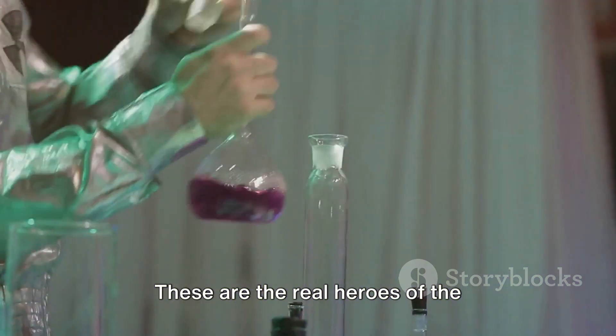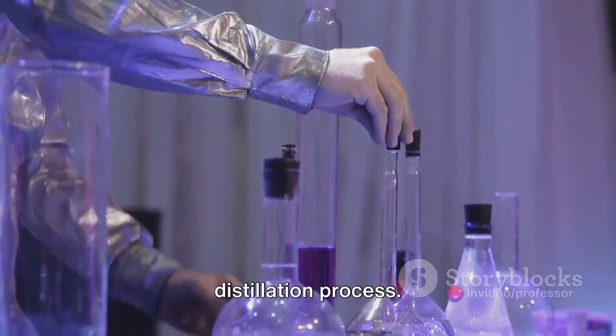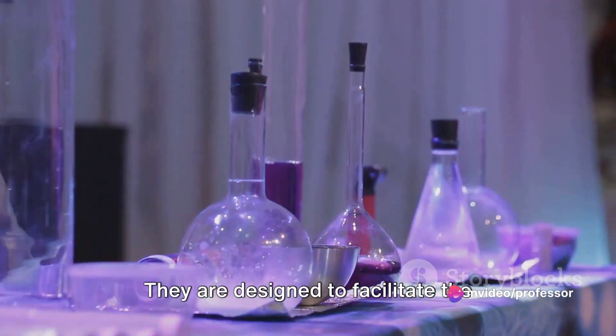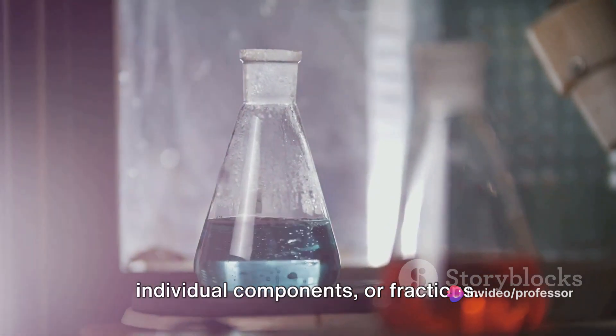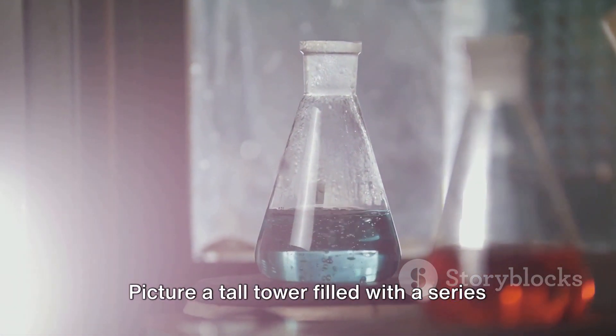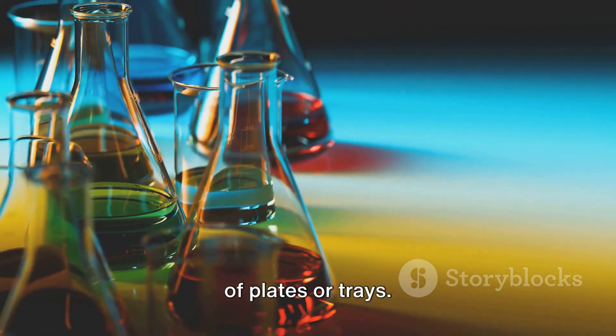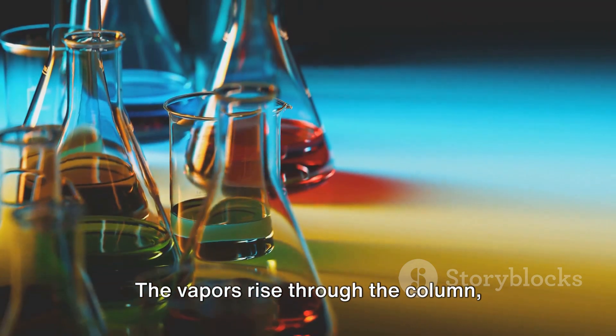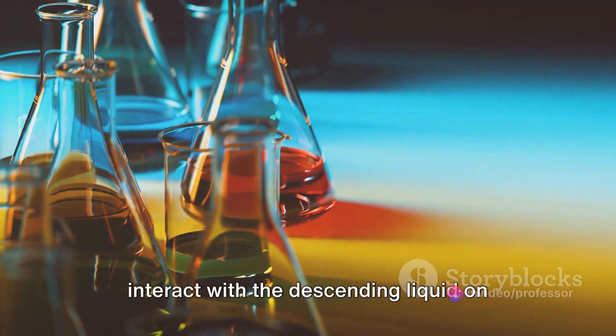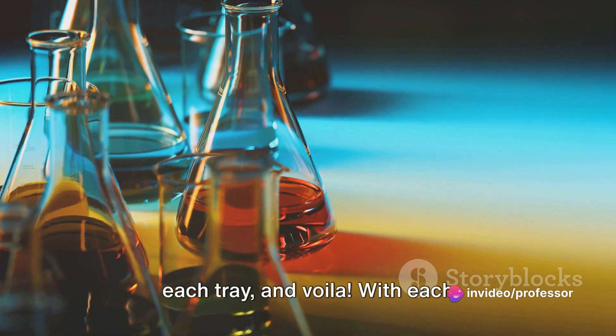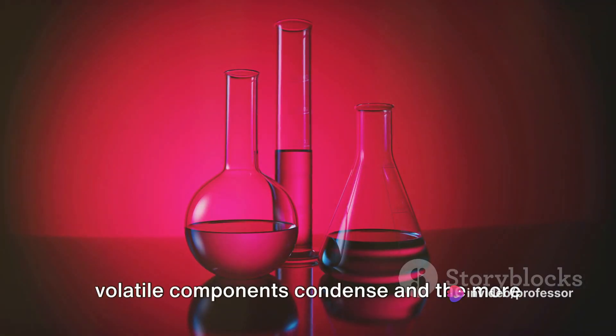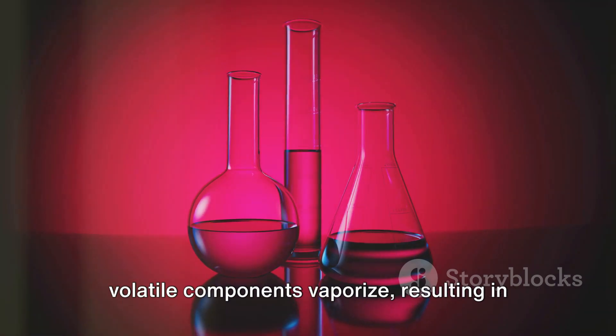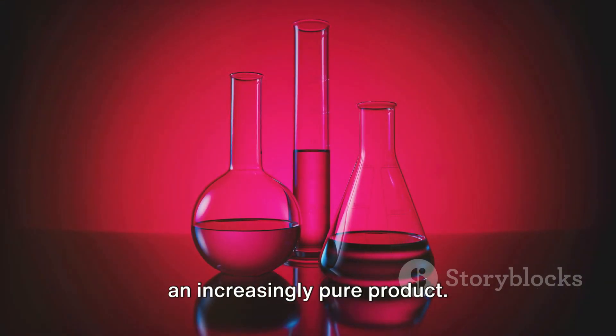Fractionating columns. These are the real heroes of the distillation process. They are designed to facilitate the separation of mixtures into their individual components or fractions. Picture a tall tower filled with a series of plates or trays. The vapors rise through the column, interact with the descending liquid on each tray, and voila! With each interaction, a bit more of the less volatile components condense, and the more volatile components vaporize, resulting in an increasingly pure product.